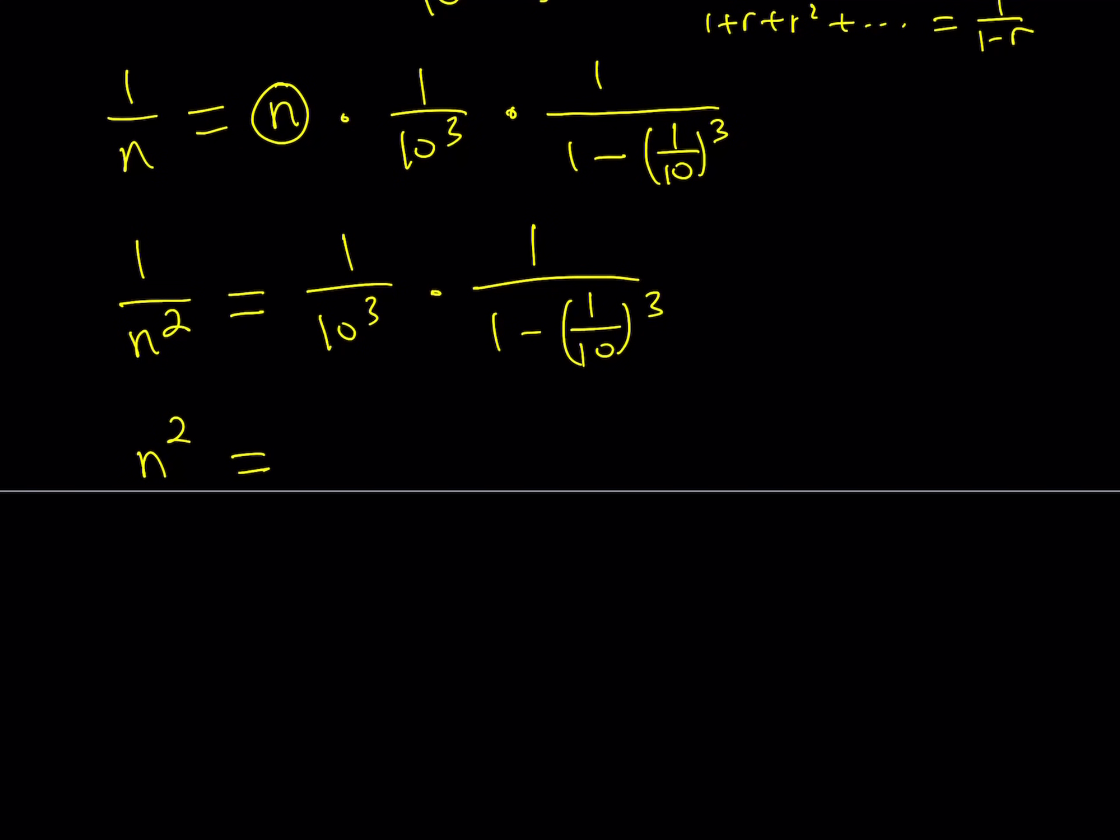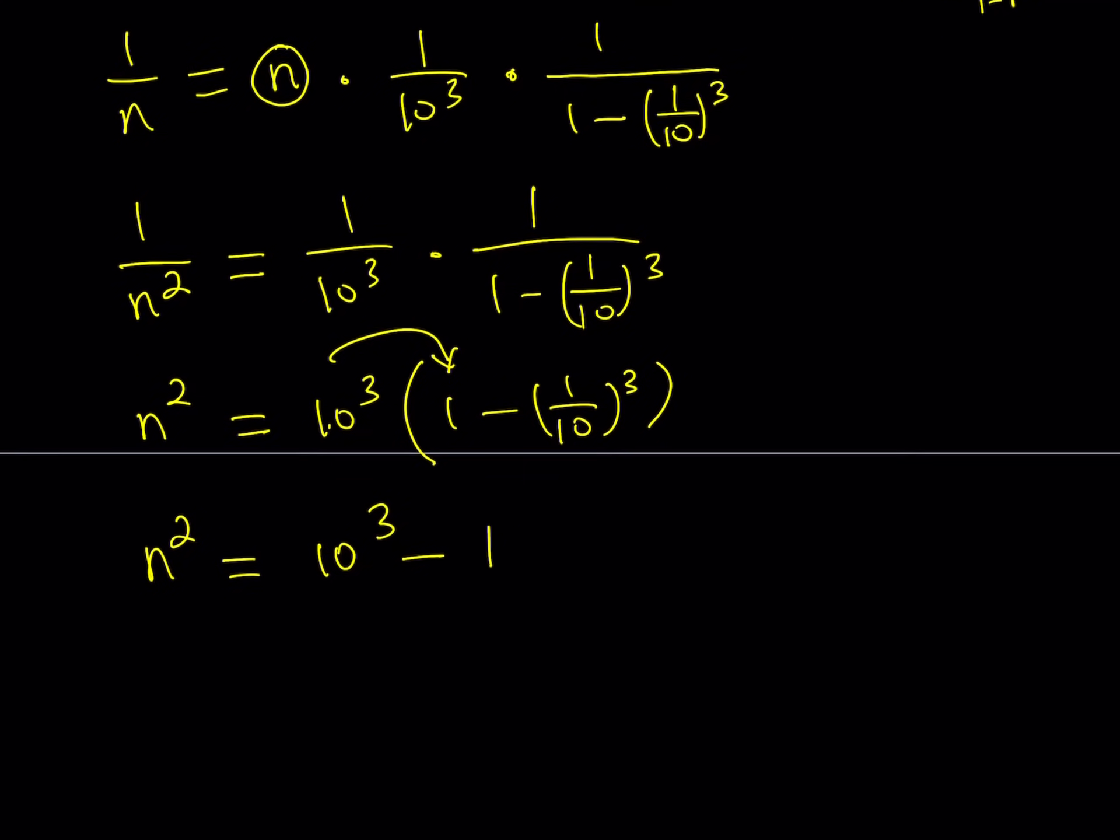Now I'd like to turn everything upside down so that we can get a nicer expression. n squared is going to be this 10 to the third multiply by everything is going to be reciprocated or turned upside down or flipped. And then from here, we get something nice because when you distribute the 10 to the third power, you're going to get 10 to the third minus. Now notice that this is one over 10 to the third, which is the reciprocal. So that's going to give you one. So that's a fairly simple equation.